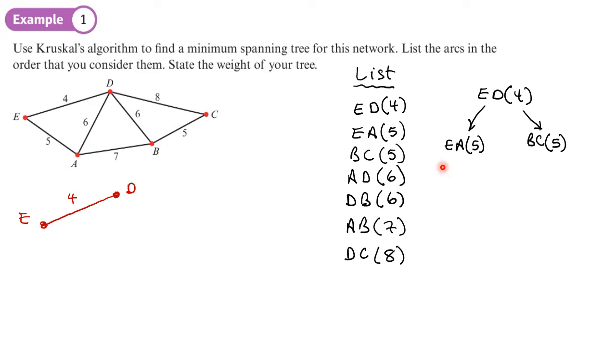Let's consider this left side here. Let's say that I add EA, which is 5, like this. Then the next one that I add would be BC. So that would be this one here. BC, still no cycles, which is 5. I'll just add that to my list.